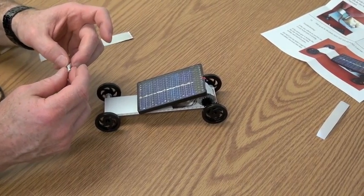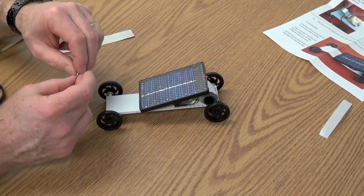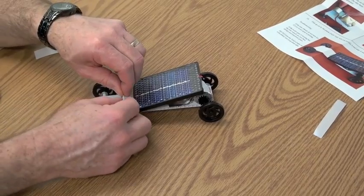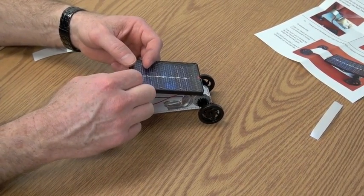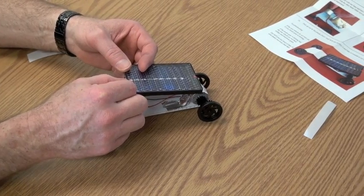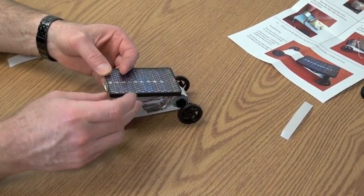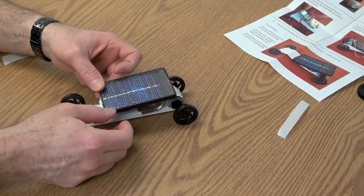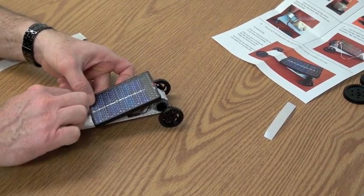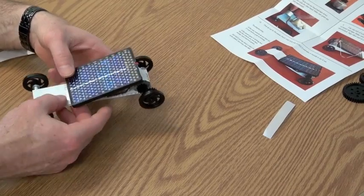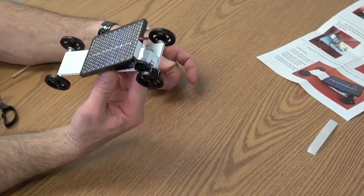Take another piece of tape and as you unfold it, secure that to the black part of your panel. Bend that up a little bit, push that down, and then your panel is now attached to your car.